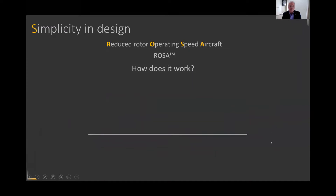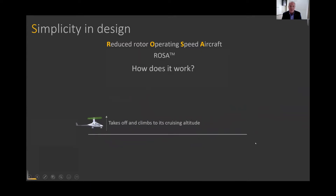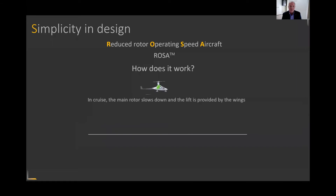So how does it work? Basically, the aircraft has the ability to operate similar to a helicopter in that it can take off and land vertically. The rotor system highlighted in green allows the aircraft to take off and climb to a cruise altitude, and once it reaches cruise altitude it simply converts into what we call airplane mode. The rotor slows down in flight and the lift is transferred to the wing system.